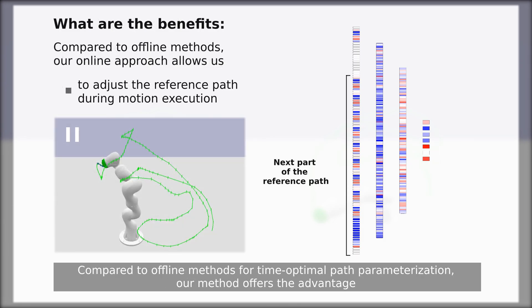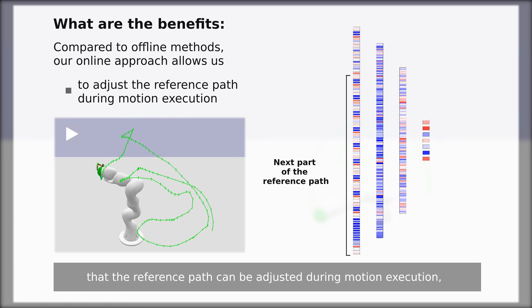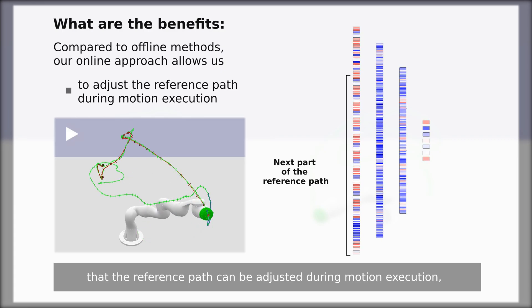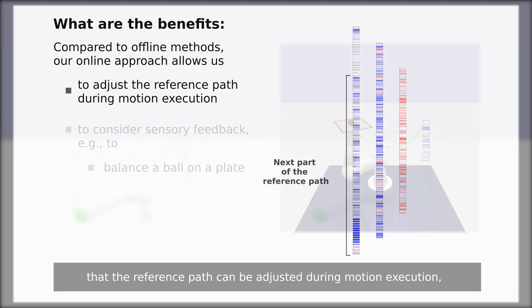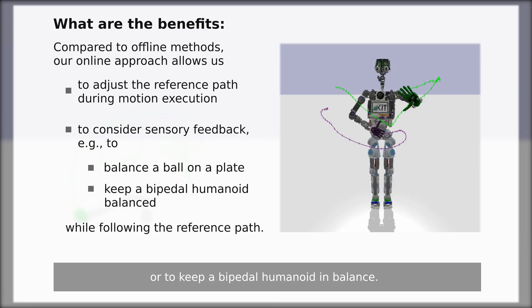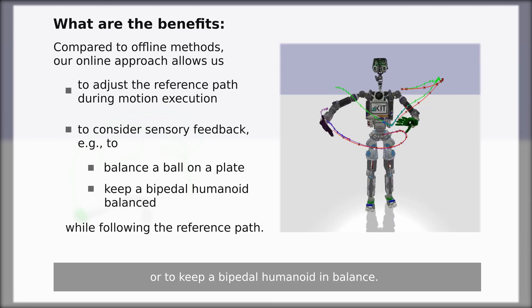Compared to offline methods for time-optimal path parameterization, our method offers the advantage that the reference path can be adjusted during motion execution, and also allows us to consider sensory feedback for instance to balance a ball on a plate or to keep a bipedal humanoid in balance.